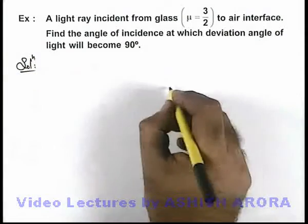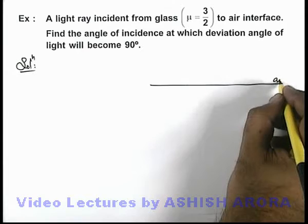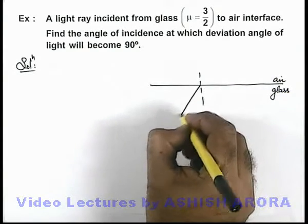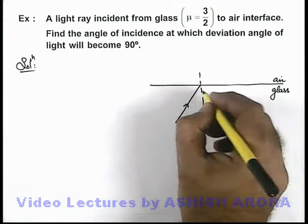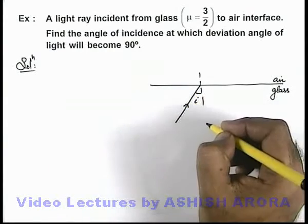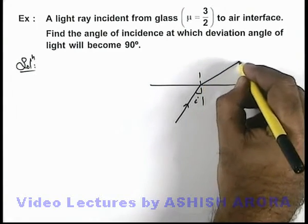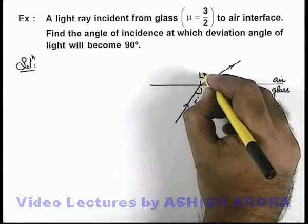Here, if we draw the interface of air and glass, and say if the light ray is incident from glass to air at an angle of incidence i, we know as air is a rarer medium, the light ray will bend away from normal at an angle of refraction r.